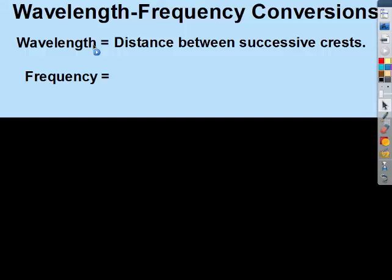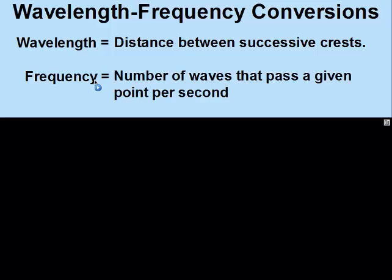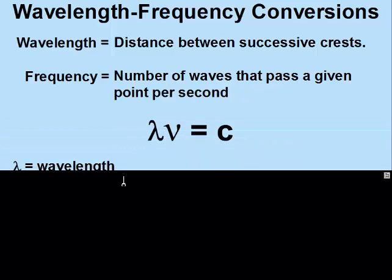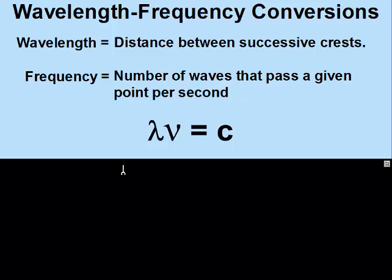Wavelength is the distance between successive crests, while frequency is the number of waves that pass a given point per second. The equation is wavelength times frequency equals the speed of light.